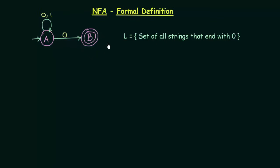Now let us observe this NFA and try to figure out what is the difference from the DFA. If you look carefully, you can see that there is a starting state represented by this arrow, so A is the starting state, just the same as in DFA. And A on getting input 0 — it could either stay in A itself or go to B. There are multiple next states, which was not possible in DFA.